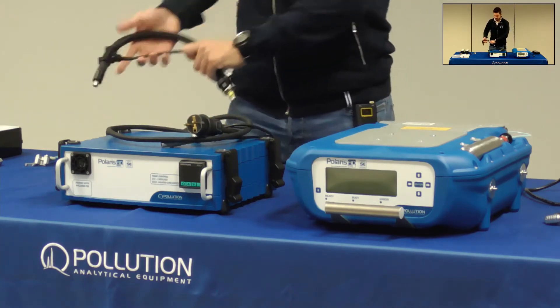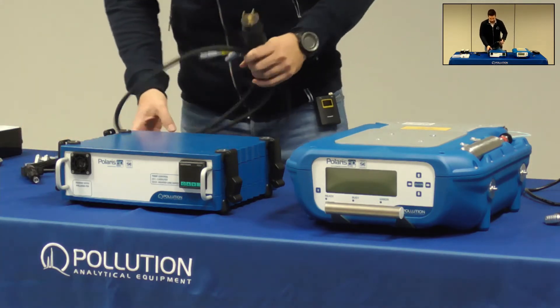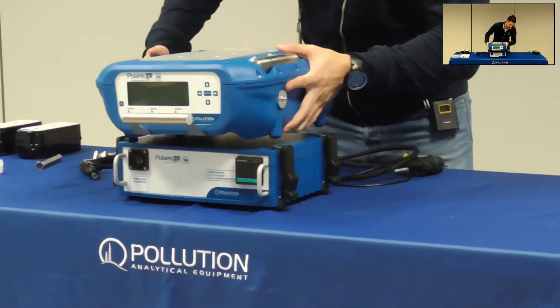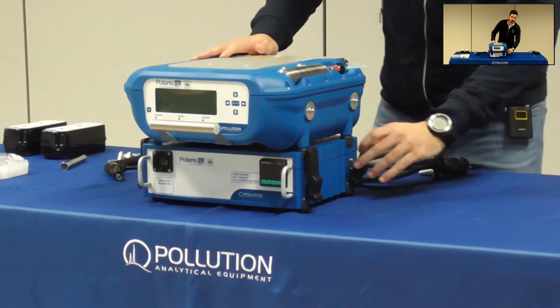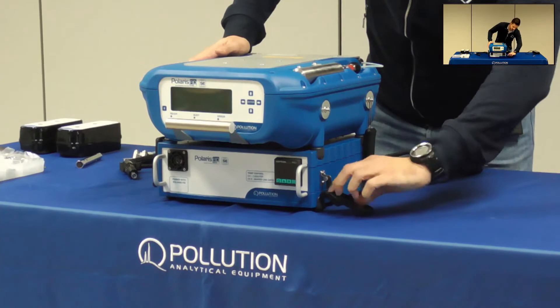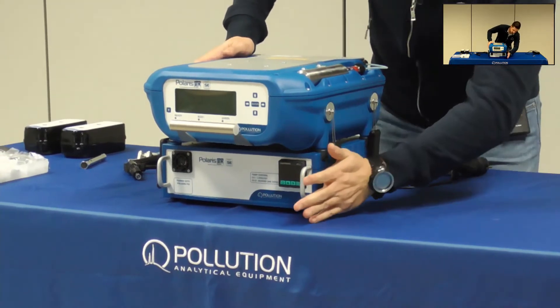To connect the docking station to Polaris you need to perform some simple operations. First place the analyzer on top of the docking station and use the hooks to fix them. Then you need to connect the cables on the back.